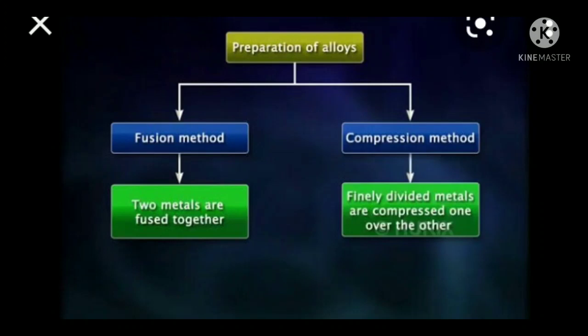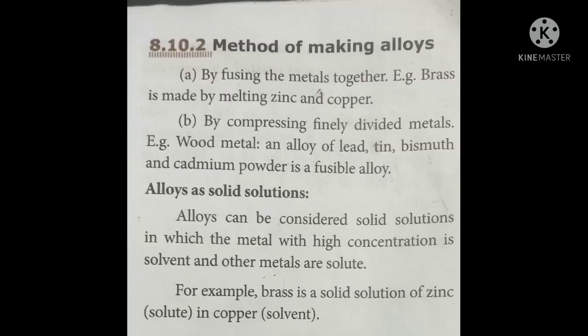In the fusion method, the metals that you want to make into an alloy are melted by heating to high temperatures. The molten metals are then cooled at room temperature and all these metals exist in a single phase. They are cast into different shapes based on our needs. Examples include brass, bronze, etc.